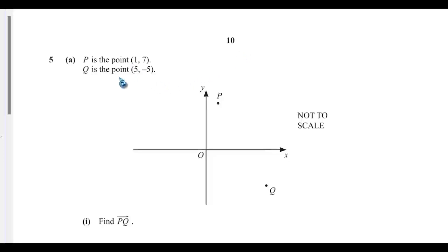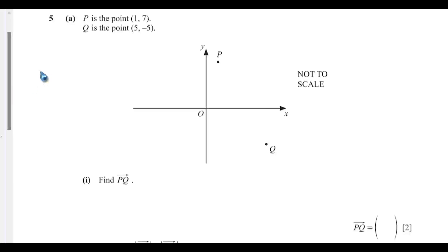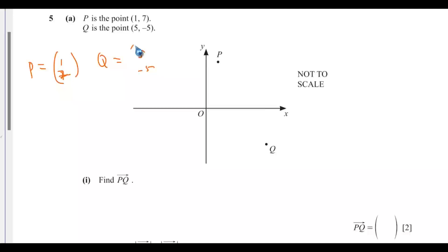Question 5a. P is the point (1, 7) and Q is the point (5, negative 5). We need to find the vector PQ. We can write P as a column vector: 1, 7. Then Q will be equals to 5, negative 5.